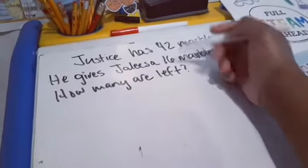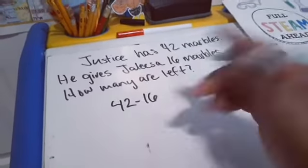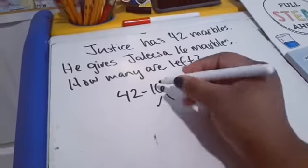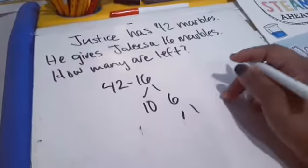out 42 minus 16. But the way to break that down instead of doing the traditional way is you're going to break down the 16. So you make 10, and then we have 6. Then we break down the 6 into 3 and 3. So then we'll do 42 minus 10, which we all know